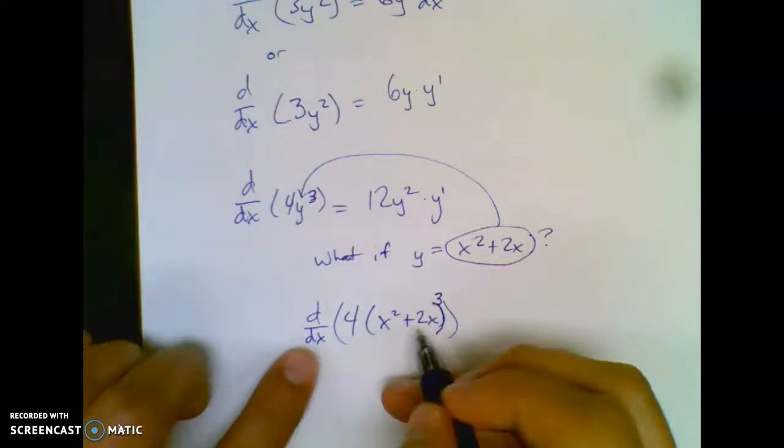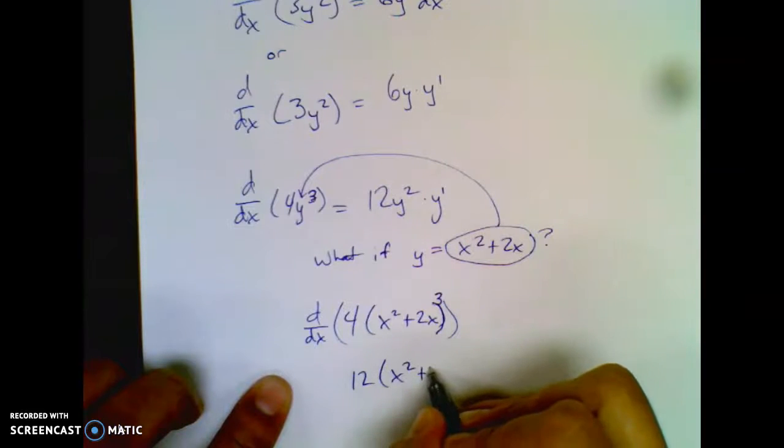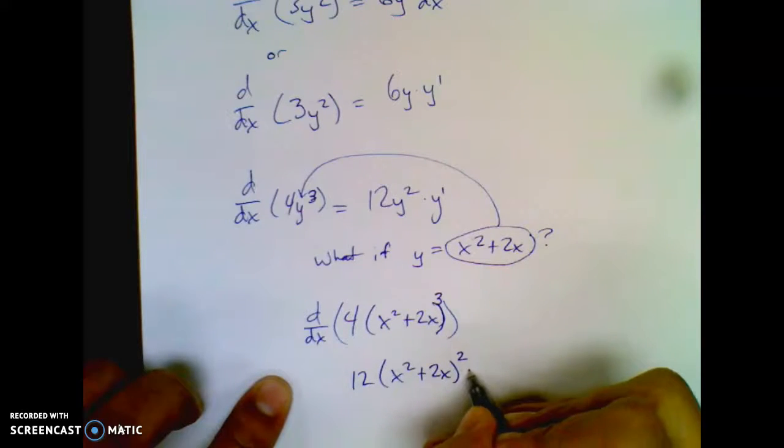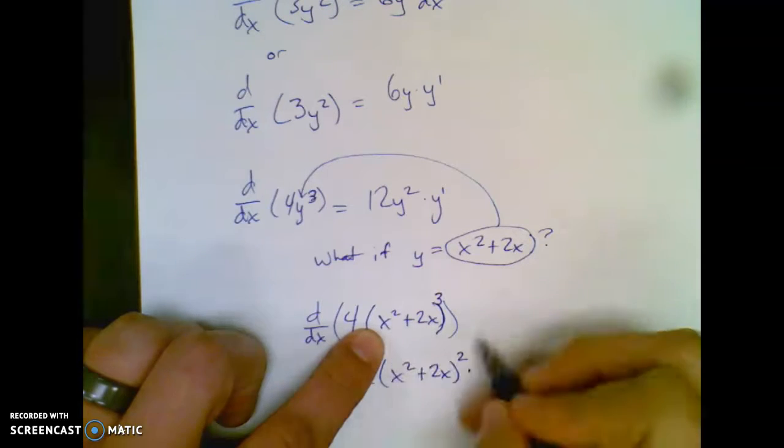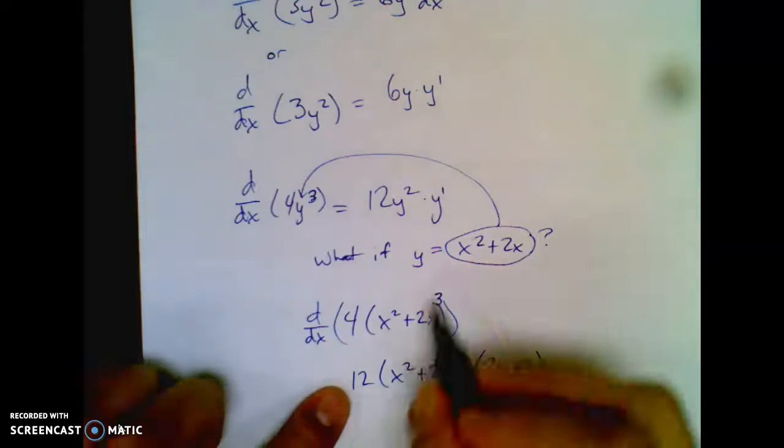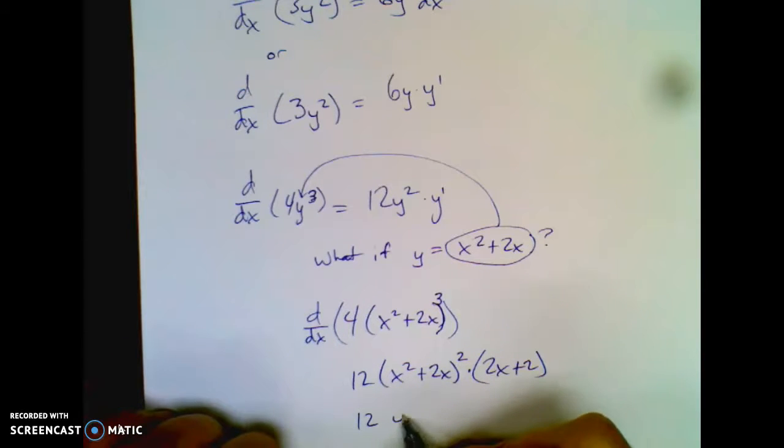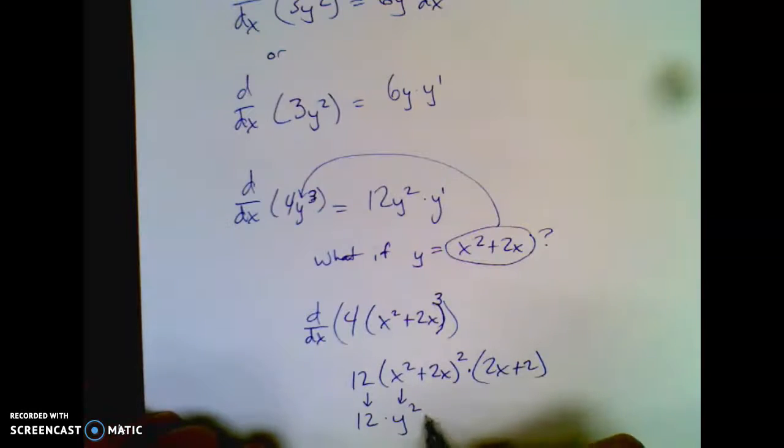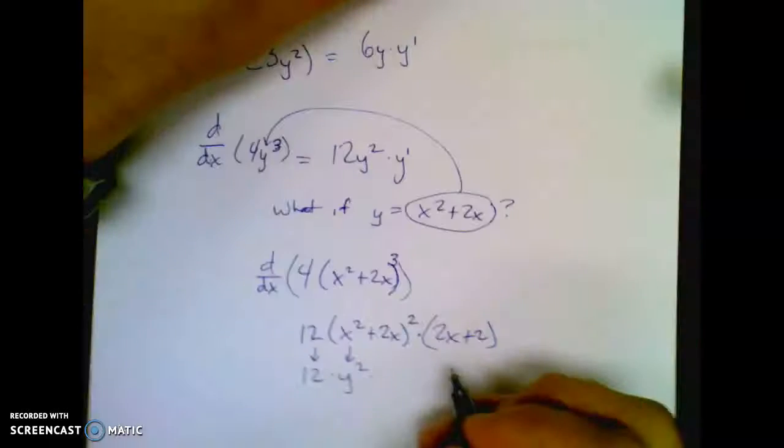Well, if you took the derivative of this, you'd do Ninja rule. 3 times 4 is 12, and then I write this thing squared. And then I do the derivative of the inside, so it's 2x plus 2. That is the same as the other answer. This is 12, this is y², and because that's y, y is this, and then this is y prime.